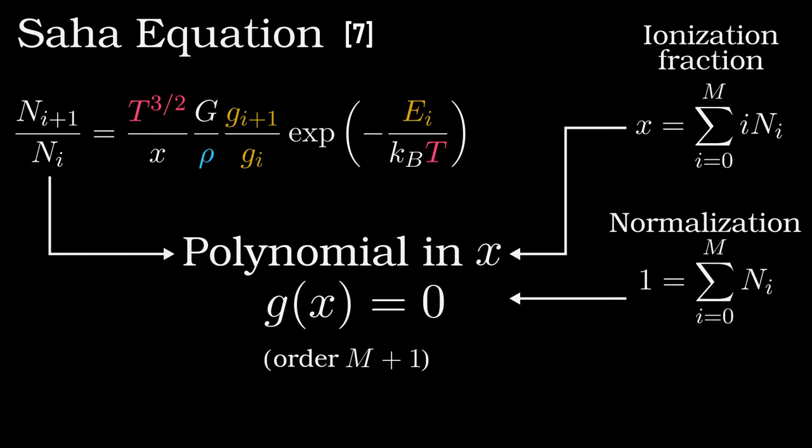The long and short of all this is that we will then have a polynomial in x to a degree one higher than the highest ionization state. For hydrogen, we have a maximum ionization of one, so we get a quadratic. That's fine. Possible to solve analytically. For helium, the maximum ionization is two, and we get a cubic. Also doable. For lithium, we get a quartic, and so on for other elements.